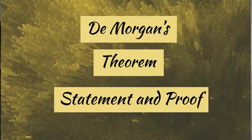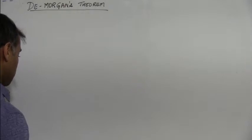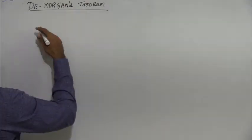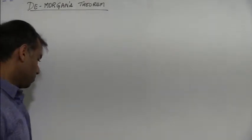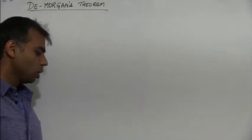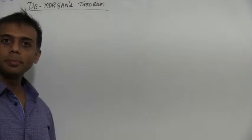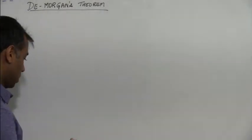In this session we will discuss De Morgan's theorem. There are two basic statements. The first statement states that the complement of the sum of two or more variables is equal to the product of the complement of the individual variables.